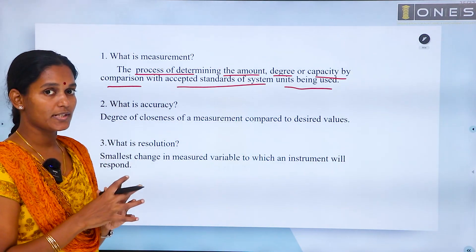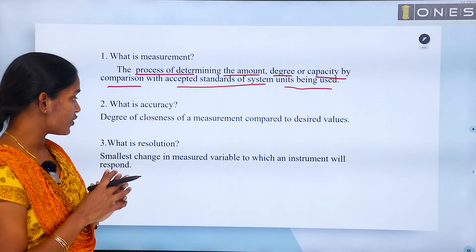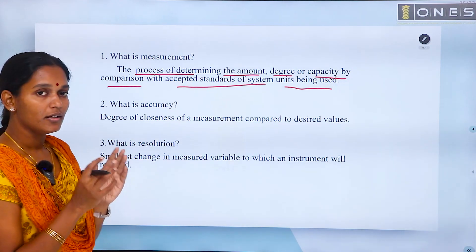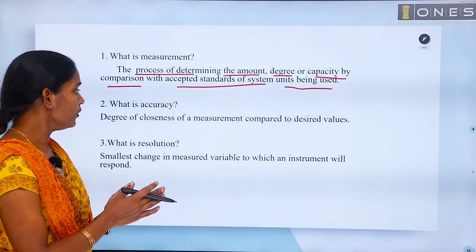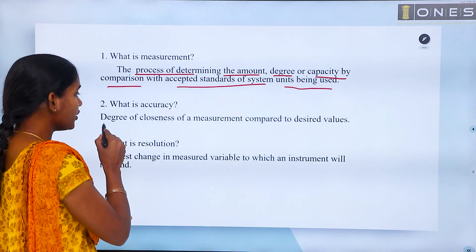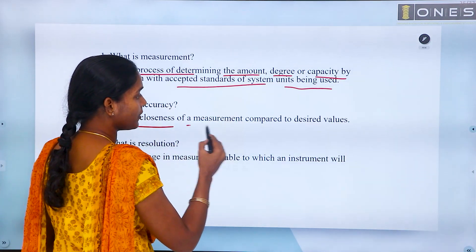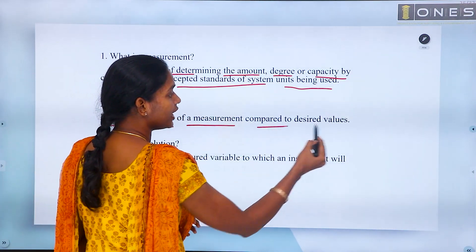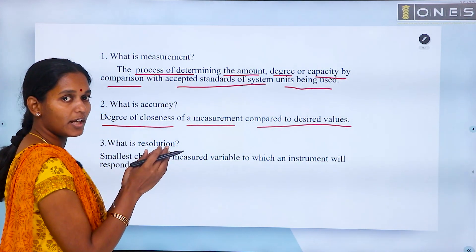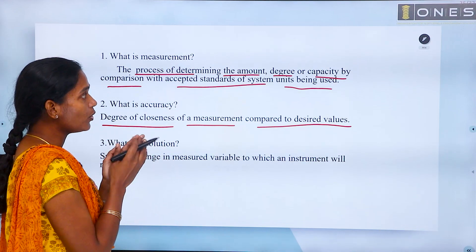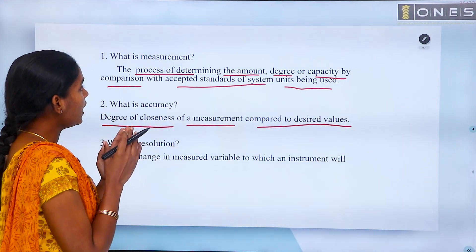What is accuracy? Accuracy is the degree of closeness of a measurement compared to the desired value. The desired value is what we compare to determine accuracy.